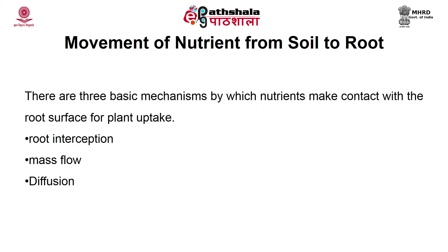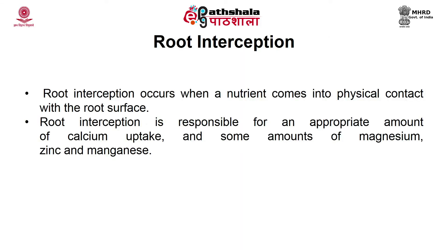Next is the movement of nutrients from soil to roots. There are three basic mechanisms by which nutrients make contact with the root surface for plant uptake: root interception, mass flow, and diffusion. Root interception occurs when a nutrient comes into physical contact with the root surface. As a general rule, root interception increases as the root surface area and mass increases, enabling the plant to explore a greater amount of soil. Root interception is enhanced by mycorrhizal fungi which colonize roots and enhance root exploration into the soil. Root interception is responsible for an appropriate amount of calcium uptake and some amount of magnesium, zinc and manganese.